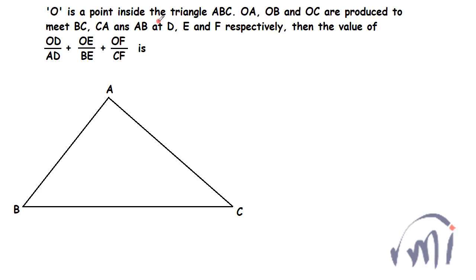So in this problem, O is a point inside the triangle ABC — you can randomly assume any point inside the triangle. If I assume this as point O, and then if I make lines OA, OB, and OC and produce them to meet BC, CA, and AB at points D, E, and F.